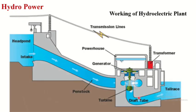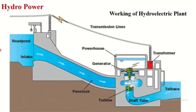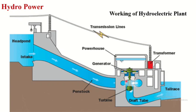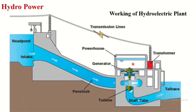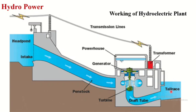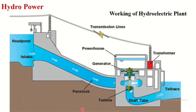Let us see the working of a hydroelectric plant. Water is collected in a catchment area during the monsoon season and stored in a large reservoir. This stored water is allowed to flow through the penstock to the powerhouse. The potential energy of the flowing water is converted into mechanical energy with the help of a hydraulic turbine. This mechanical energy is utilized to run the generator, which in turn generates electric power. This electric power is supplied to the required places with the help of a transformer and transmission lines. After coming out from the turbine, water flows through the draft tube and is fed to the river with the help of a tailrace.